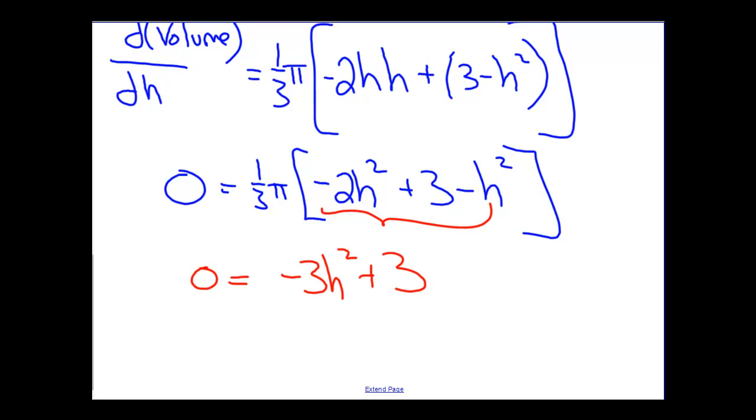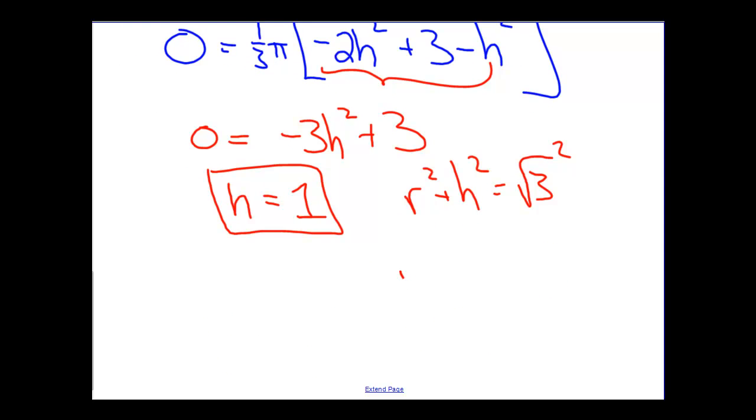The only way this will work clearly is if H is equal to 1. So now we've found that the height has to equal 1, and we would like to go through and figure out all the rest of the expressions now as well. So we know that R squared plus H squared is equal to the square root of 3 squared. Or that R squared must equal, H squared will be 1, so we have 3 minus 1. R must equal the square root of 2, and remember that volume is one third pi R squared H.